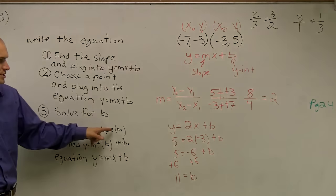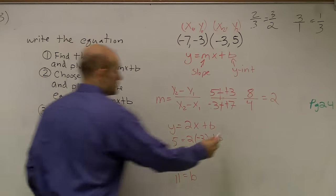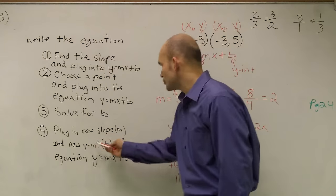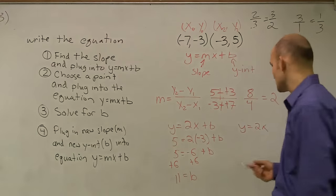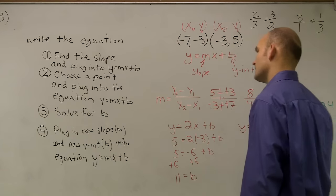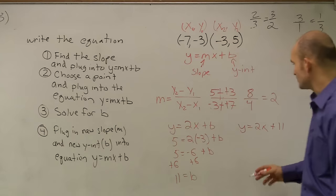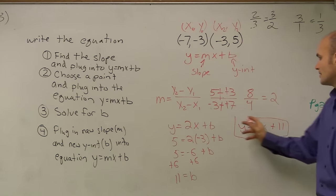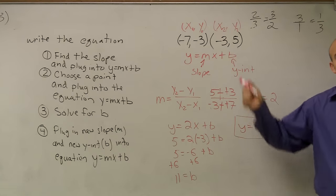Then plug in your new slope, which was m, or which was 2, and your new y-intercept, which I found out was 11, into the equation y equals mx plus b. So I plug in my new slope and my new y-intercept, and I have my new equation of my line with my two points.